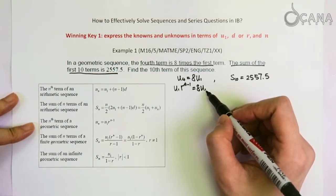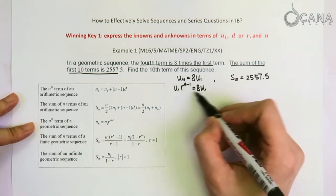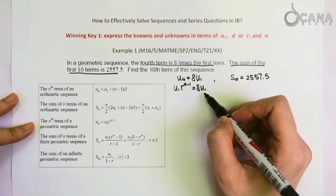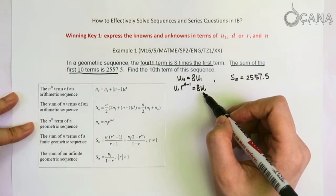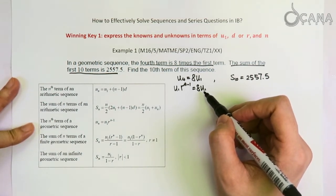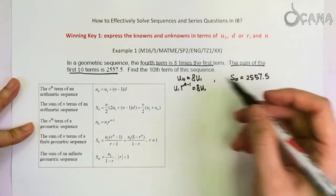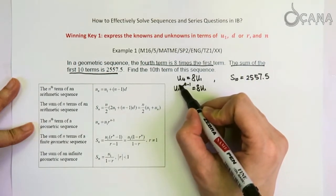It's very safe to deduce that U1 cannot be 0 in this case, because if U1 is 0, then the entire geometric sequence just contains 0, contains terms that are 0 only. And that is pointless. So we can just assume that U1 cannot be 0.